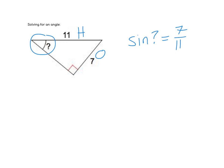To get an angle based on a ratio, I've got to use arc sine, otherwise known as inverse sine. So we're going to build that as inverse sine of 7 over 11.